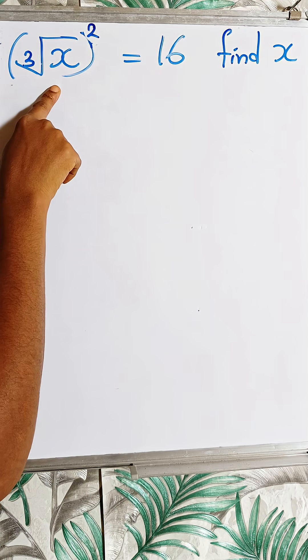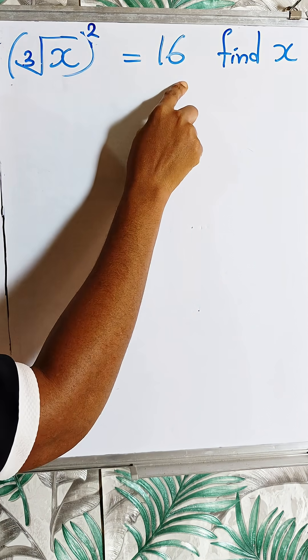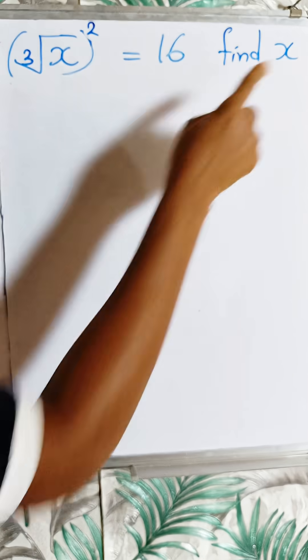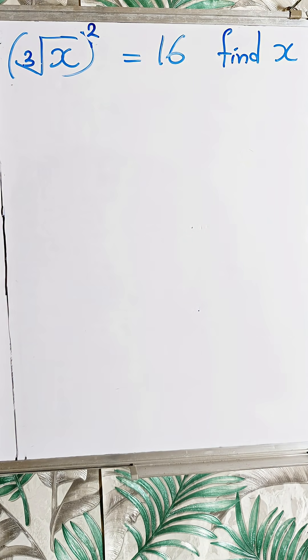We have the cube root of x raised to power 2 equals 16. Find x. How do we find x in this equation?